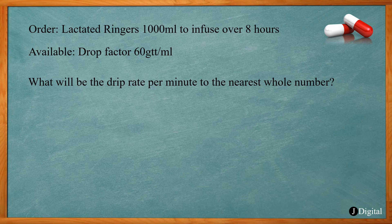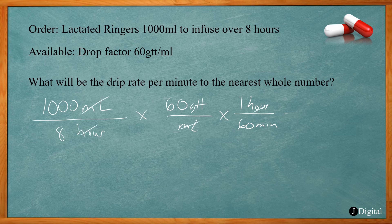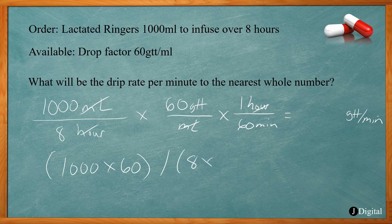This problem orders lactated Ringer's 1000 milliliters to infuse over 8 hours with a drop factor of 60 drops per milliliter. We set up: 1000 milliliters over 8 hours, times 60 drops per milliliter, times 1 hour over 60 minutes. Milliliters and hours cancel, leaving drops per minute: 1000 times 60 divided by (8 times 60) equals 125 drops per minute.